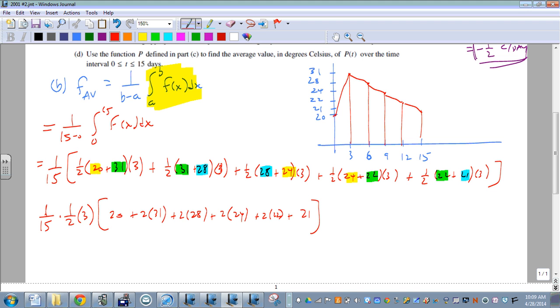So if we go ahead and work all that out, we end up getting 25.1 degrees Celsius. So that's our average temperature over that time period. Approximate. We approximated that using the trapezoidal sum. That's our approximate average area or average temperature over that time.